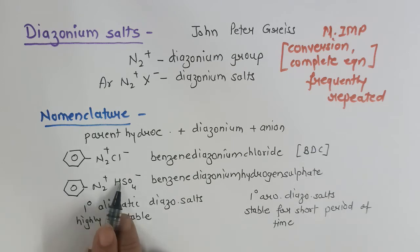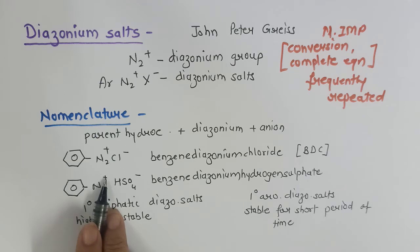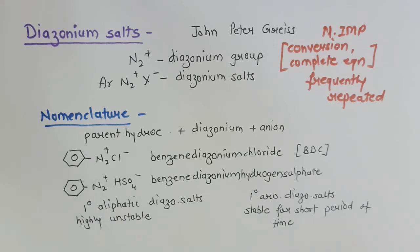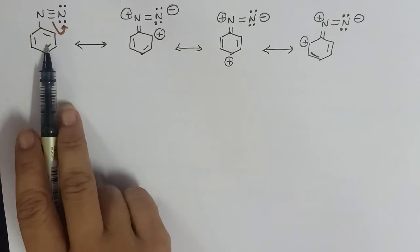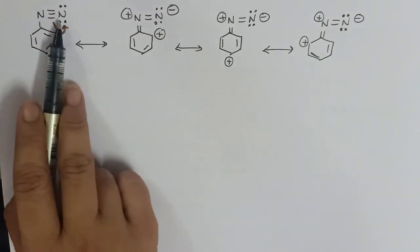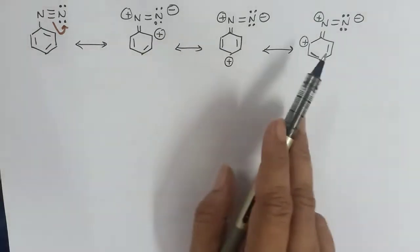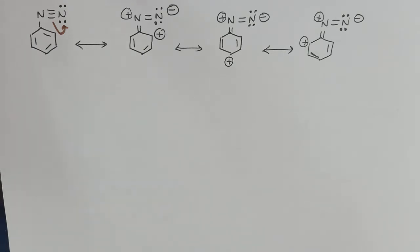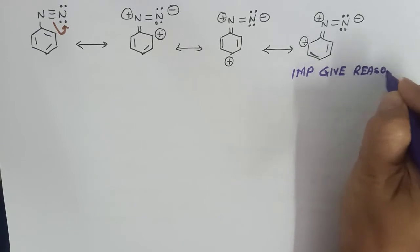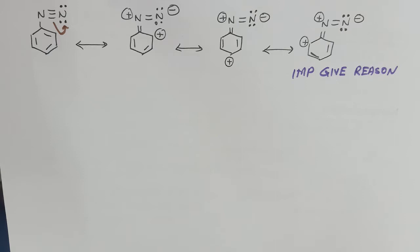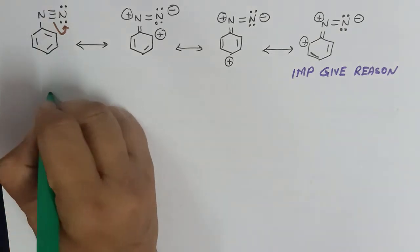In aromatic compounds there will be resonance. Nitrogen has a positive charge on it — it is the third most electronegative element — so having a positive charge makes it unstable. But due to resonance it becomes stable, although only for a short period of time. The diazo group forms resonating structures where the triple bond moves, creating delocalization of charges, and this delocalization gives stability to the first-degree aromatic diazonium salt. This is an important 'give reason' question: why are first-degree aromatic diazonium salts stable compared to first-degree aliphatic diazonium salts?